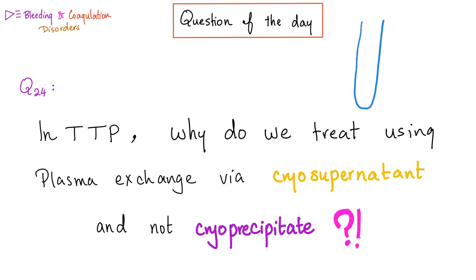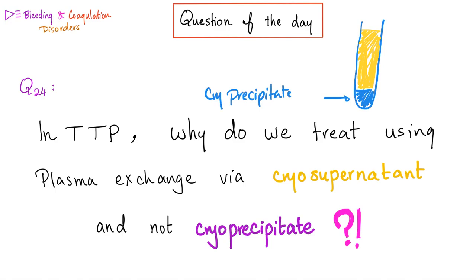Here's your lovely test tube. You leave it, and then you have something on the top and something on the bottom. Whatever is on the bottom is called the precipitate — in this case, cryoprecipitate. What's on the top is the cryosupernatant.